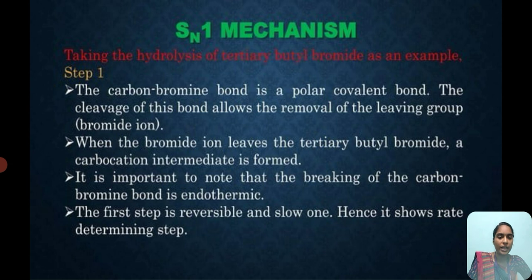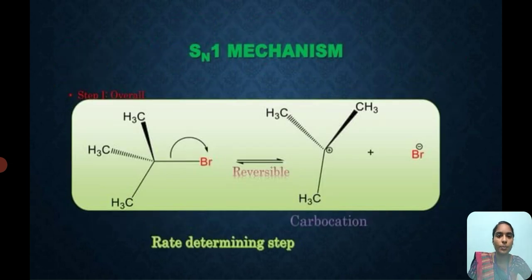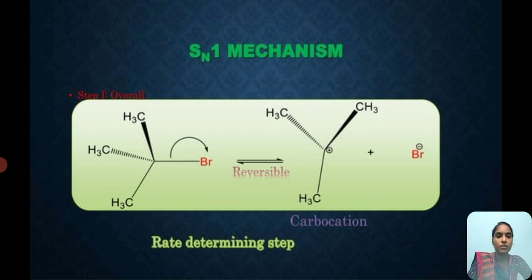Hence it shows the rate determining step. This is the first step mechanism. The tertiary butyl bromide, on formation of the carbocation, gives a carbocation and a nucleophile which is the bromide ion, Br⁻.